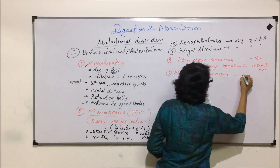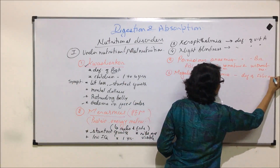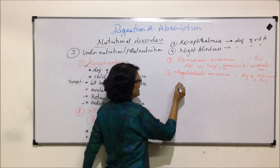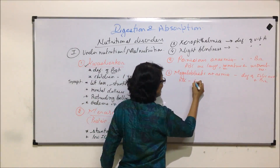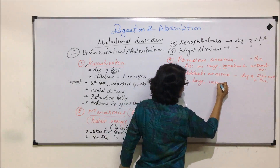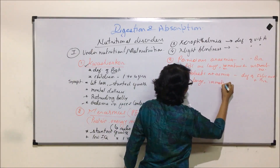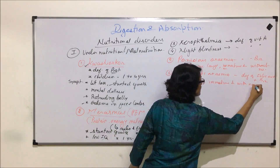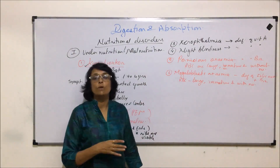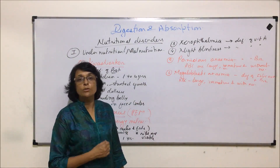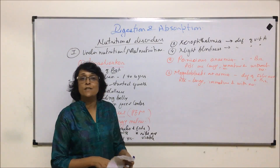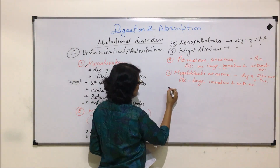Megaloblastic anemia is due to deficiency of folic acid, and also B12 if both are absent — mainly folic acid. Here the RBCs are also large and immature. In both types of anemia the RBCs never undergo full maturation, hemoglobin content is affected, and anemia results. These two conditions are given different names — pernicious anemia and megaloblastic anemia.